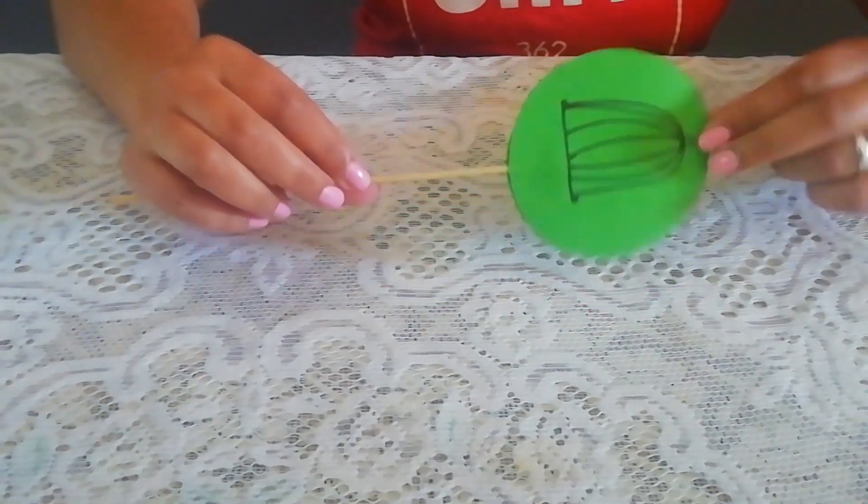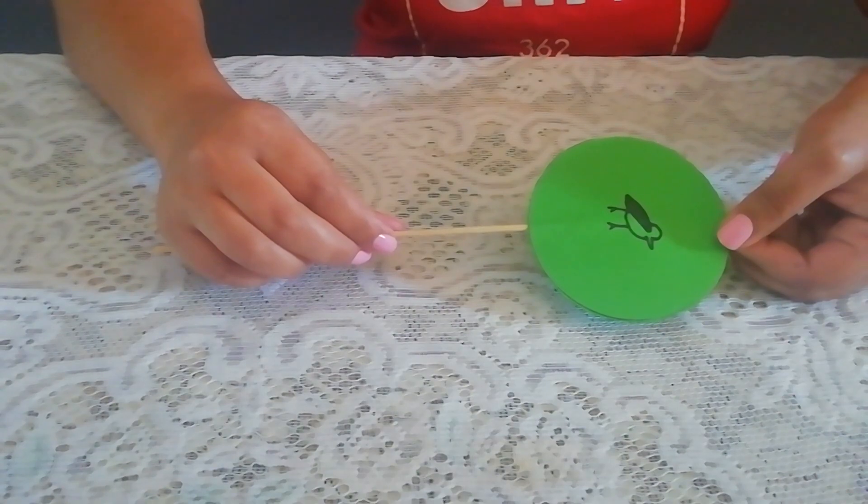And there you have it. Spin the skewer between your palms in order to see the little bird inside the cage, or whatever your illusion may be.